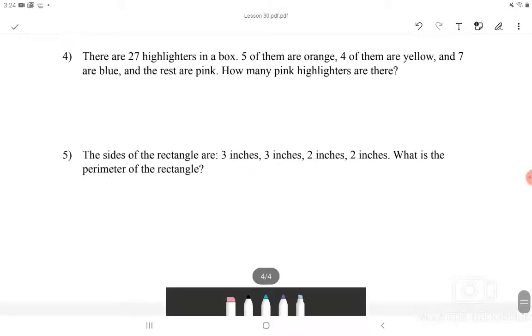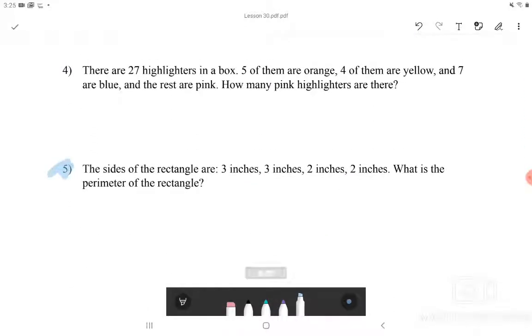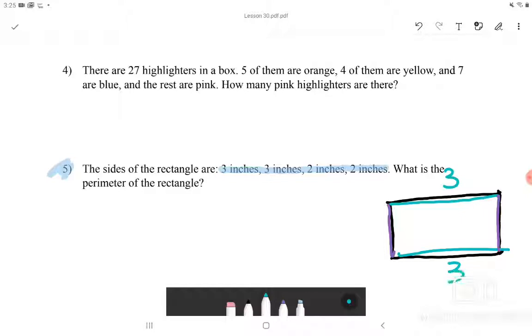Let's do the last problem that we have, which is number 5. The sides of the rectangle are 3 inches, 3 inches, 2 inches, and 2 inches. What is the perimeter of the rectangle? Let's draw the rectangle over here. The rectangle has the same sides and the opposite sides. So this and this have the same length. And left and right would have the same side in this case. So I will do 3 inches, 3 inches, 2 inches, and 2 inches.